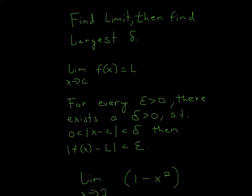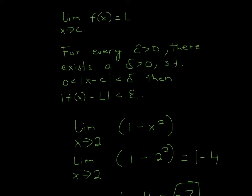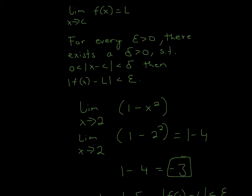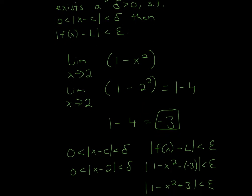For this problem, they just want you to find the limit and then find the largest delta. This is just the statement of what the epsilon-delta definition is. The actual limit is the limit as x approaches 2 of 1 minus x squared. So let's find the actual answer to this limit.